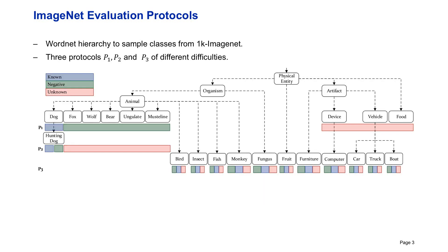For that, we use the WordNet hierarchy to sample classes from the ImageNet dataset. We carefully design the protocols to simulate different open spaces, using semantic similarities between the selected classes. We present three evaluation protocols with different levels of visual similarity, semantic meaning, and increasing complexity and overlap between features of known and unknown classes. We also provide negative classes for some approaches that require non-unknowns to train.